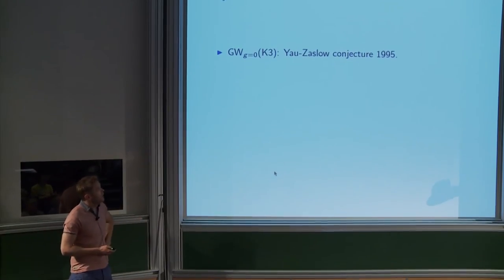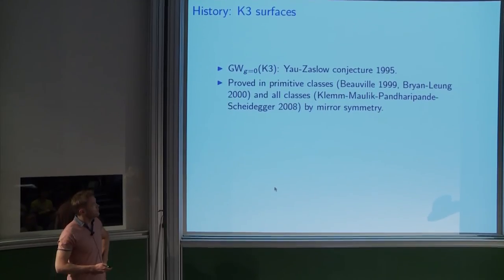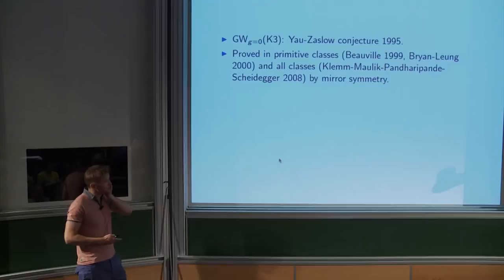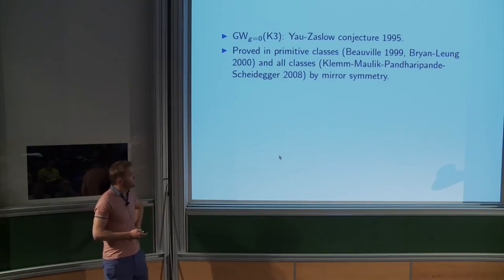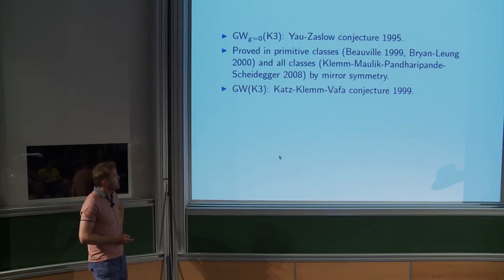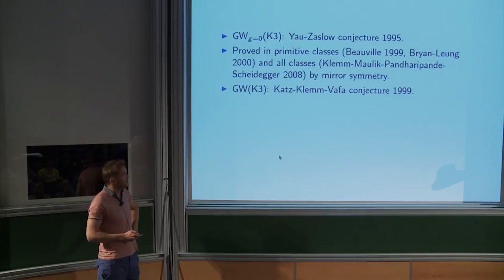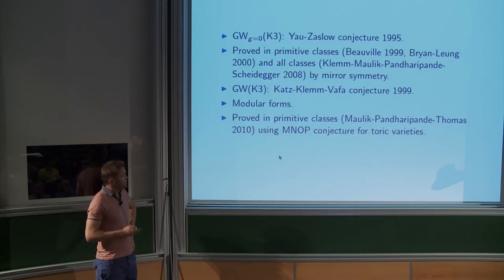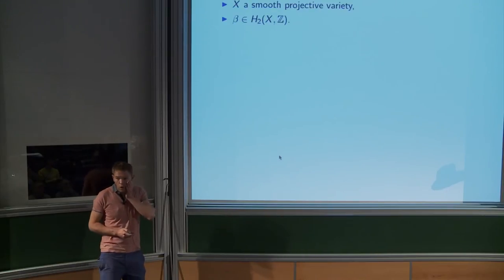In the case of K3 surfaces in genus zero, there was the Yau-Zaslow conjecture in 1995, involving modular forms. It was proved for primitive classes by Beauville and Bryan-Leung, and then in all classes in a roundabout way by invoking mirror symmetry in genus zero. For the full Gromov-Witten theory of K3 in all genera, there's the Katz-Klemm-Vafa conjecture, proved in primitive classes. Today we deal with all classes and all multiple covers.